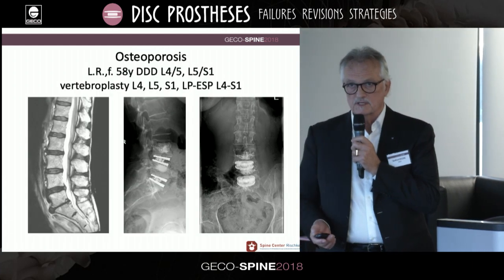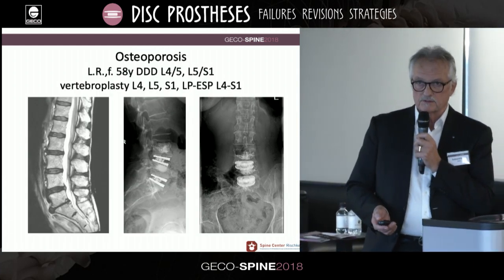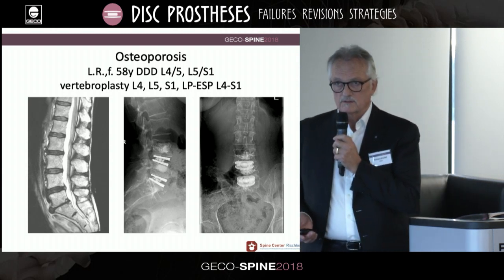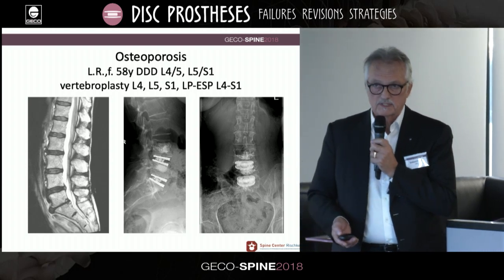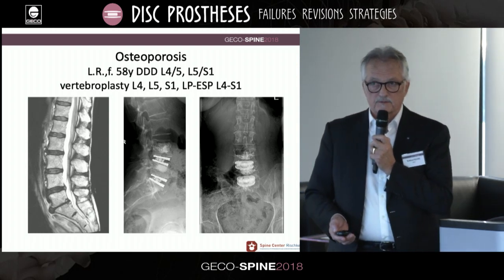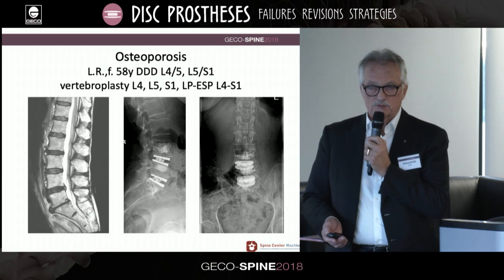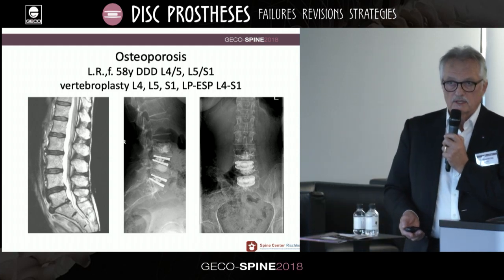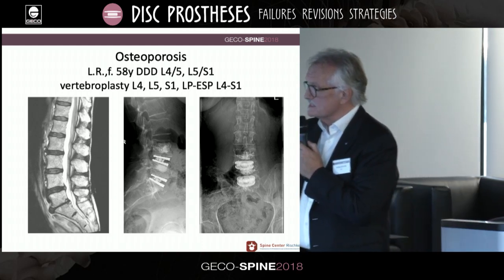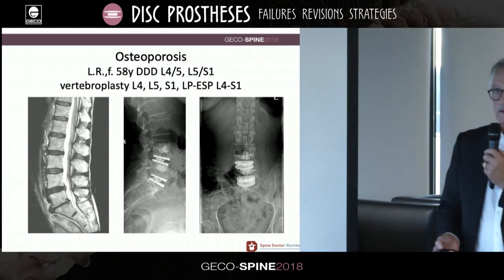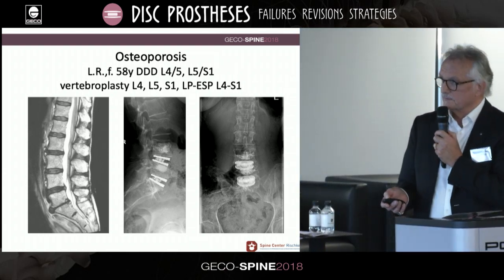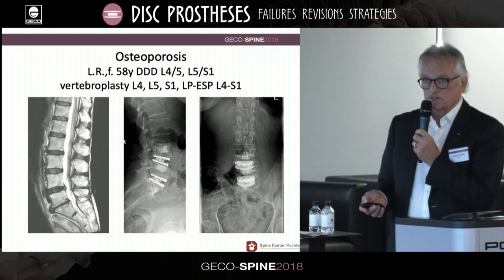The next example is a severe degenerative disc disease at L4-5 and L5-S1 with osteoporosis. In this case, as I use it regularly, I perform a vertebroplasty simultaneously in the anterior approach and put in the prosthesis. Remarkably, even with this vertebroplasty, we can see a little bit of subsidence of the upper vertebral end plate, but without any symptoms — this is more of a radiologic cosmetic effect.